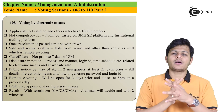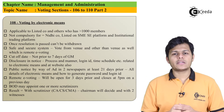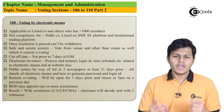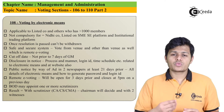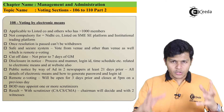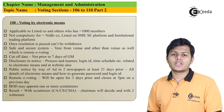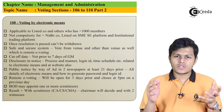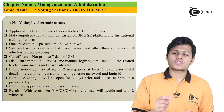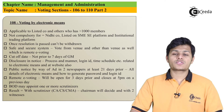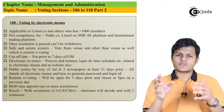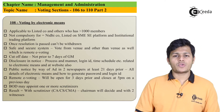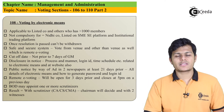Remote e-voting तीन दिन पहले शुरू होती है और जिस दिन GM हो उसके एक दिन पहले शाम 5 बजे तक बंद कर दी जाती है। Chairman एक scrutinizer appoint कर सकता है जो CA, CS या CMA हो सकता है - कोई भी एक person। Scrutinizer पूरा process scrutinize करेगा - कितने votes favour में हैं, कितने against, गलत votes, proxies कैसे आई। वो एक report बनाएगा और chairman को देगा। Chairman scrutinizer के साथ results declare करेगा, जिसमें दो witnesses भी रहेंगे। यह था section 108 - voting by electronic means।